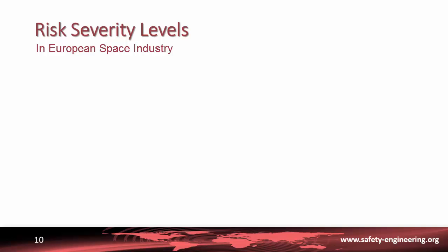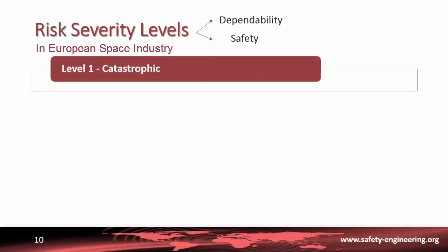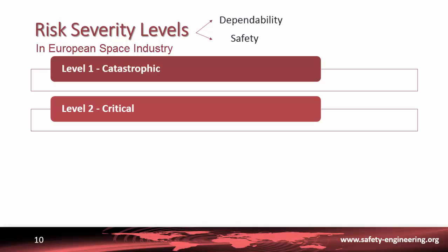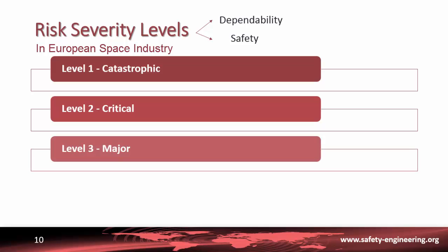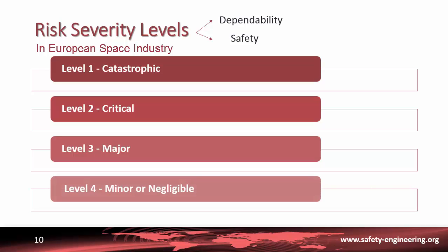Now, we will introduce the risk severity levels used in the space industry, so you will be able to classify the failure scenarios. There are four levels of severity that can be seen both from a dependability and safety point of view. From the most severe to the least severe, the four levels are Level 1 Catastrophic, Level 2 Critical, Level 3 Major, and Level 4 Minor or Negligible.